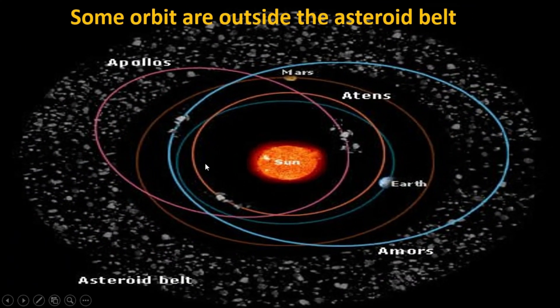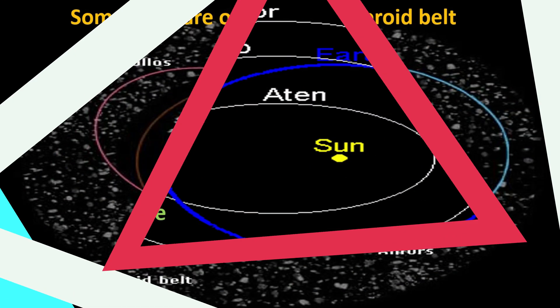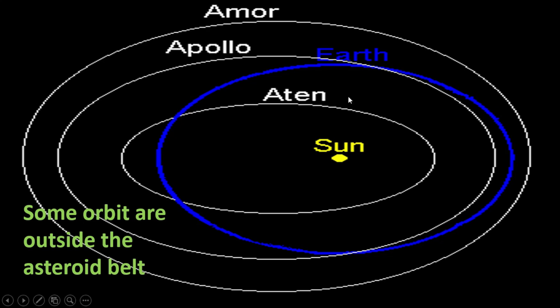There are also some orbits outside the asteroid belt, such as Apollo, Athens, and Mars. Actually, Amor, Apollo, and Athens intersect with the Earth's orbit, shown in blue.